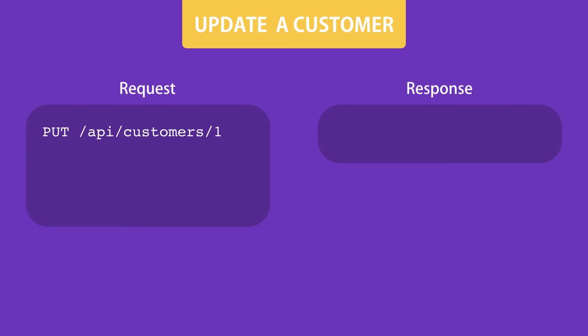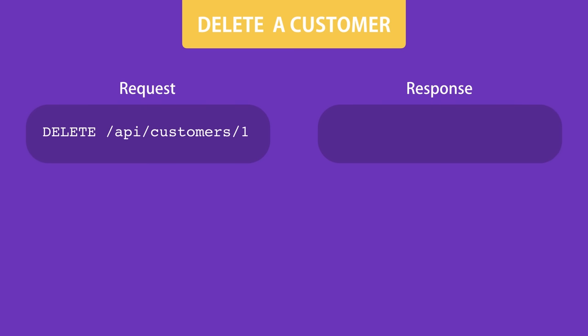To update a customer, send an HTTP PUT request to this endpoint. We specify the ID of the customer to be updated, and we also include the customer object in the body of the request — a complete representation with updated properties. The server updates the customer with the given ID. To delete a customer, send an HTTP DELETE request. We only need the ID — no need to include the customer object in the body.